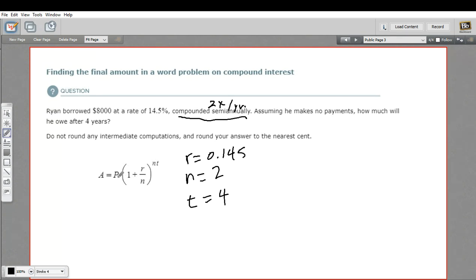Now, the other letters in this problem, the A and the P, A just stands for the amount that this person is going to owe. And P is the principal. So our P is this $8,000 that we started with.